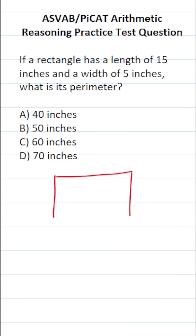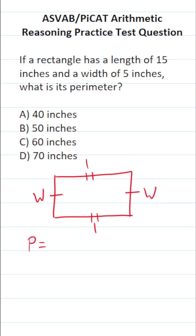Thankfully, as long as you can draw a rectangle, you should be able to solve it. This part of a rectangle is its width — this is equal to that side, and this is also a width. This is the length of the rectangle, and this is equal to that side — it's also the length of a rectangle. How do you find the perimeter of any regular polygon? You simply add up all of its sides. So in other words, you do width plus length plus width plus length.